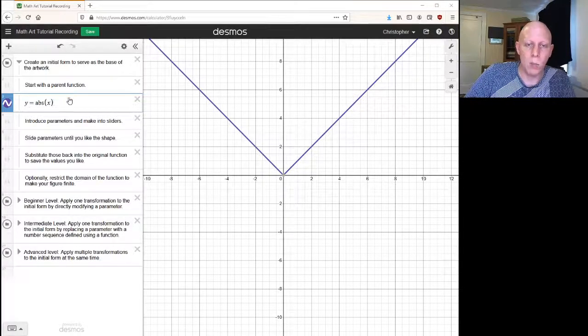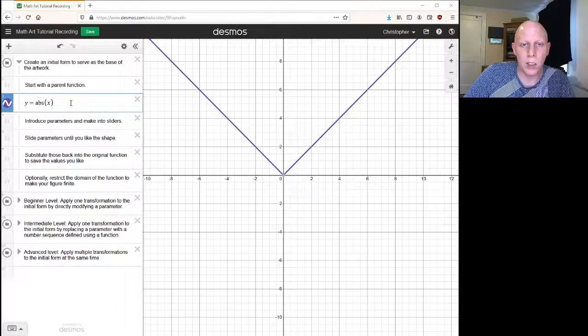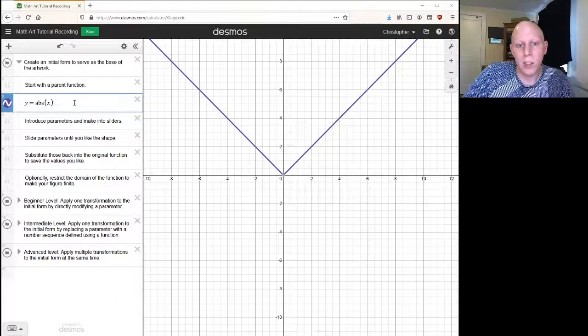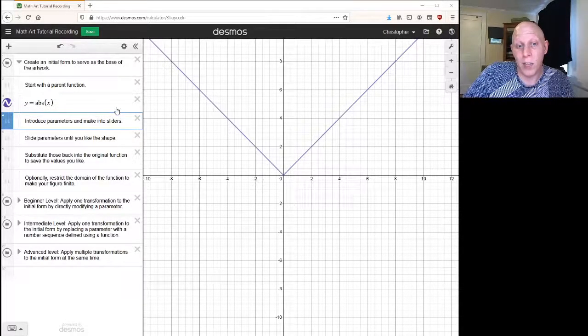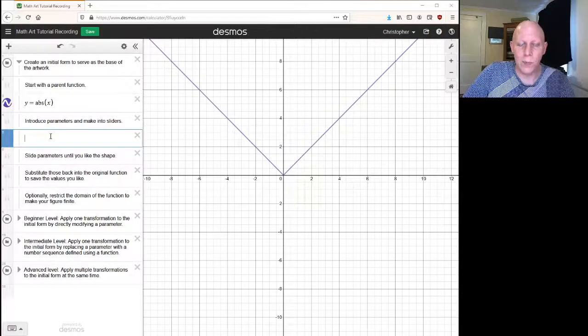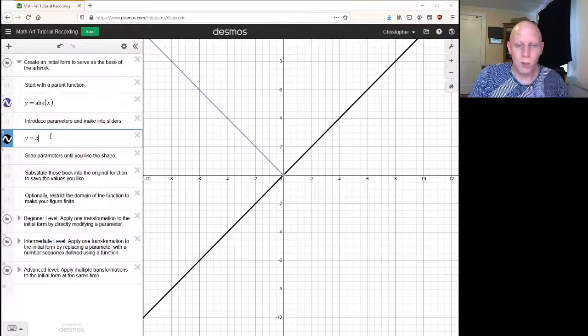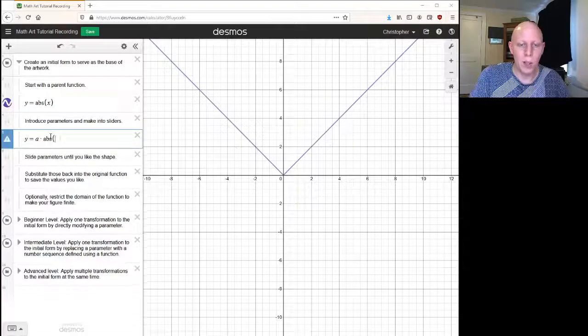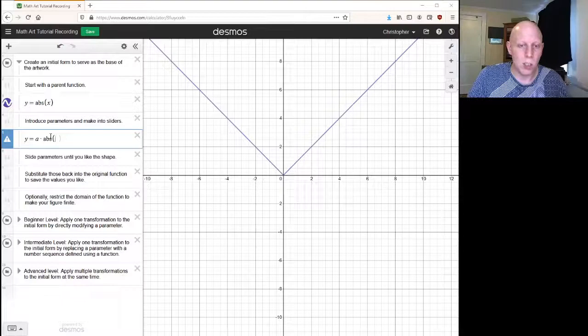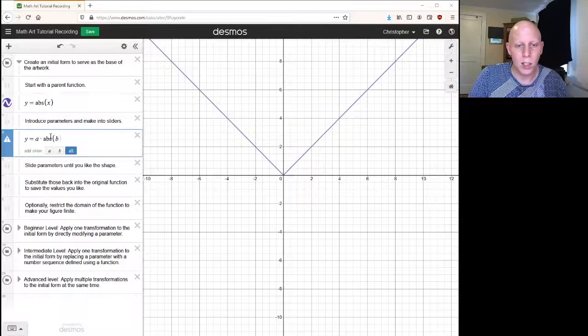Because we're going to be working with transformations of this parent function, we need to introduce plenty of parameters. We can have a vertical shift, we can have a times the absolute value—then we can have a horizontal shift, a horizontal stretch, a dilation.